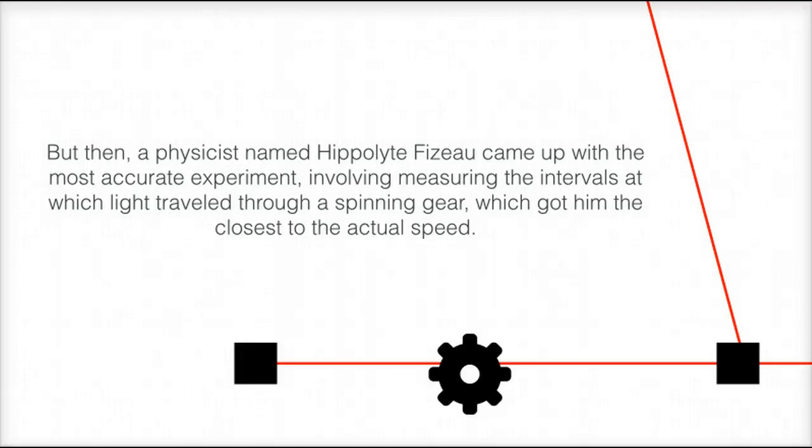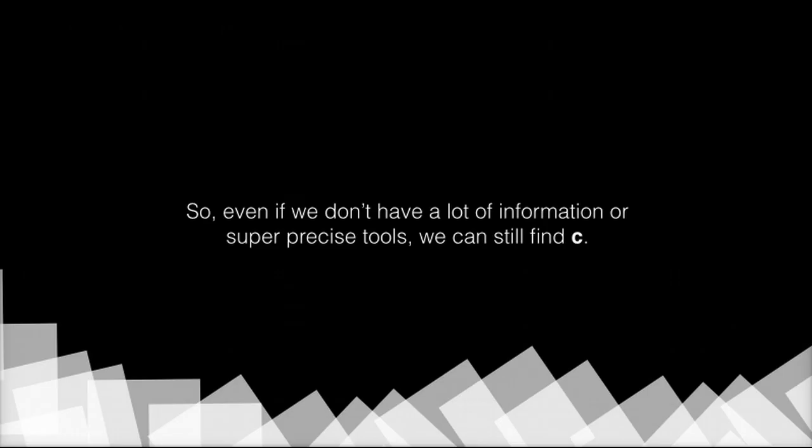But then, a physicist named Hippolyte Fizeau came up with the most accurate experiment involving measuring the intervals at which light traveled through his spinning gear, which got him the closest to the actual speed. So even if we don't have a lot of information or super precise tools, we can still find C.